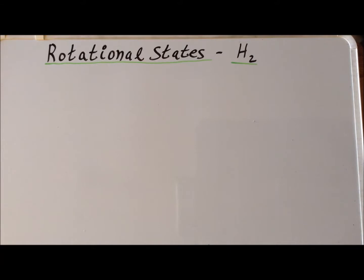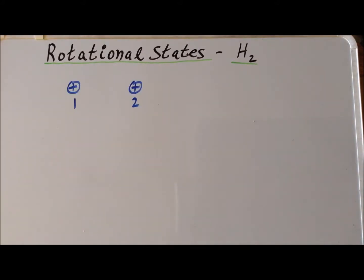In this video, we are going to discuss the rotational states of hydrogen H2. We will see that certain experimental facts are derivable from the theory of quantum mechanics. We are considering a hydrogen molecule where each of the two hydrogen atoms are the isotope hydrogen-1, sometimes called protium. The nucleus of this isotope consists of a single proton.